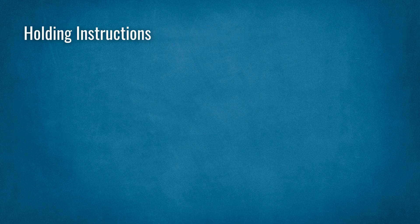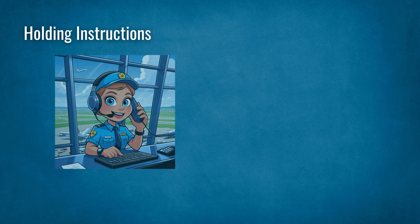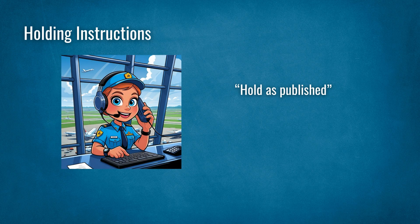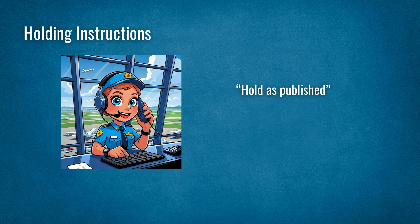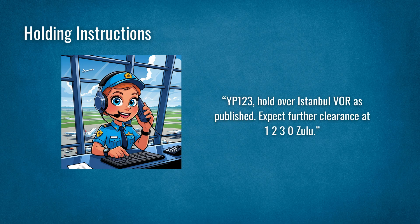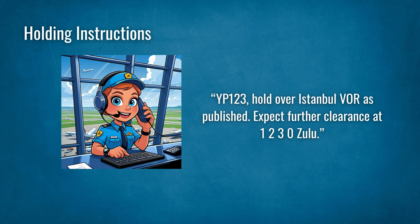Holding instructions. The easiest of all holding instructions is a hold as published clearance, which is for charted holds that you'll find on your IFR charts. You can find charted holds on approach charts, STARs, or on route charts. Your clearance will sound something like this: Yankee Papa 123, hold over Istanbul VOR as published. Expect further clearance at 1230 Zulu.